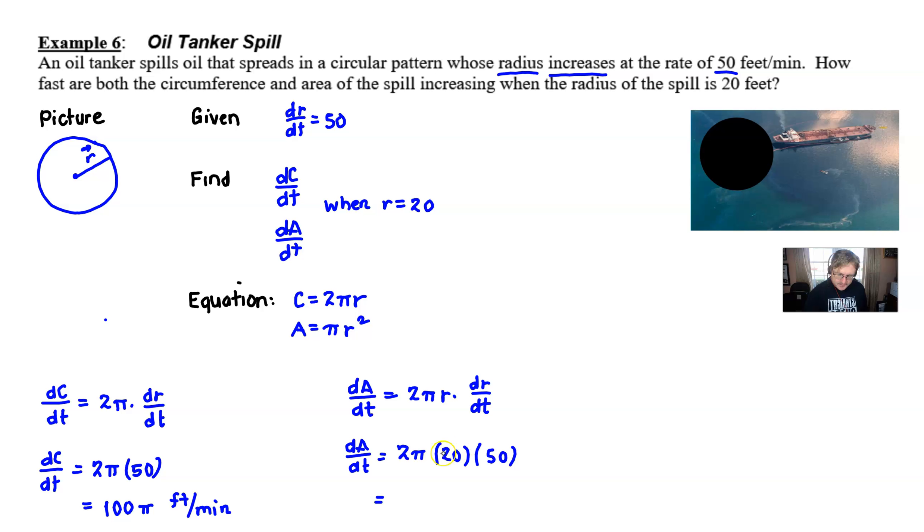Now if we go ahead and do the mathematics here, 20 times 50 is 1,000. And if we multiply by 2π we get 2,000π. And that is a positive number so we know that we're increasing, which makes sense. But the only thing that we need to do is have the right units. And this would be square feet per minute. Square feet because the top is measured as a measurement of area.